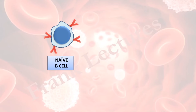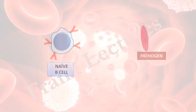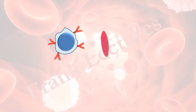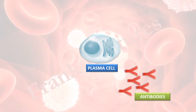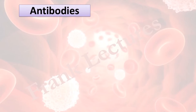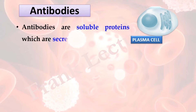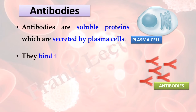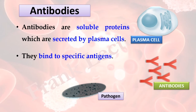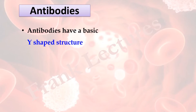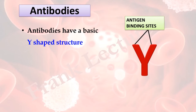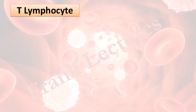A naive B cell is a B cell which has not yet encountered any antigen. When a naive B cell encounters an antigen, it matures into a plasma cell, and this plasma cell produces antibodies specific to that pathogen. Antibodies are soluble proteins secreted by plasma cells; they bind to specific antigens and help in the destruction and elimination of those antigens from the body. Antibodies have a basic Y-shaped structure: the arms of the Y represent the antigen-binding sites and the stem is known as the Fc region.